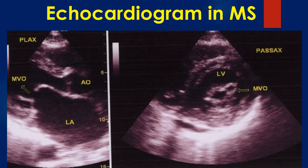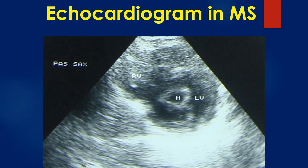Transmitral gradient is better assessed in the apical 4-chamber view by Doppler. Associated tricuspid regurgitation, if present, can be seen on the apical 4-chamber view, which will also help in estimating the right ventricular systolic pressure from the TR gradient.